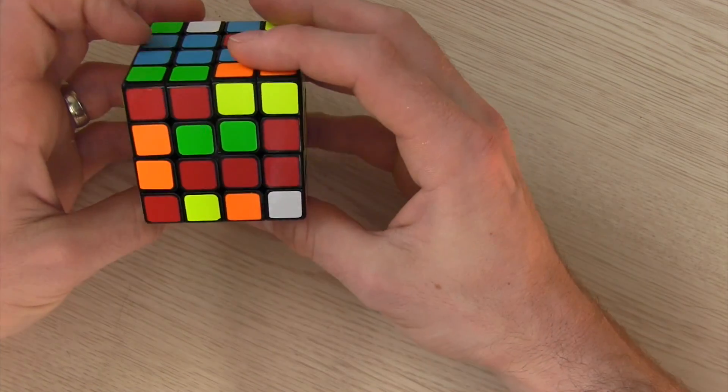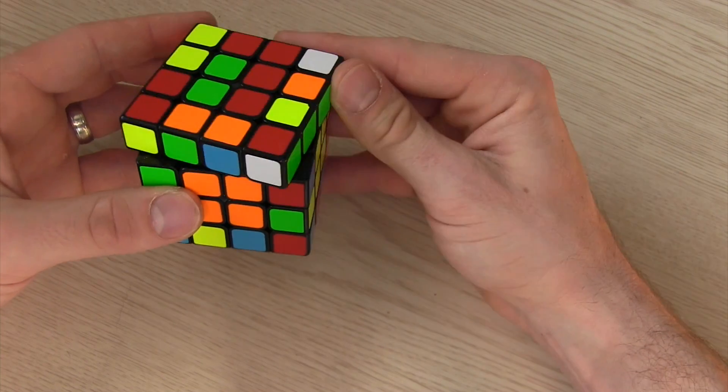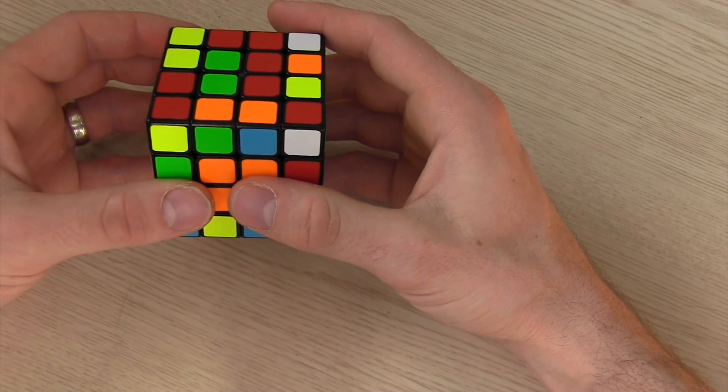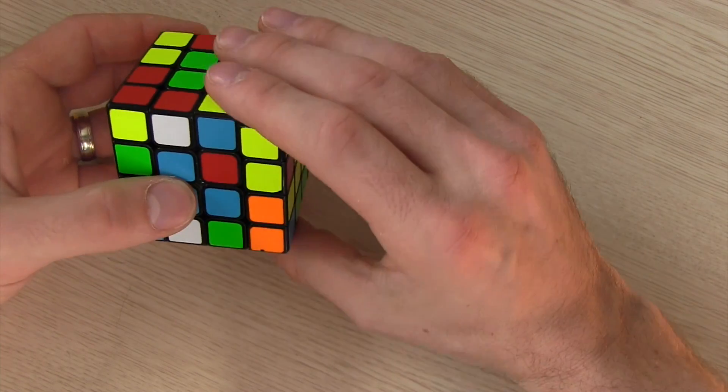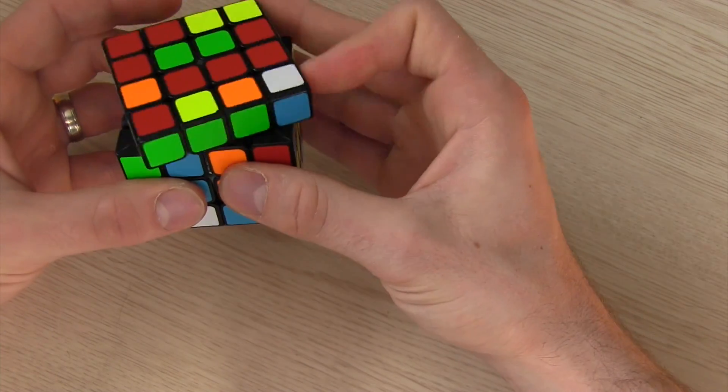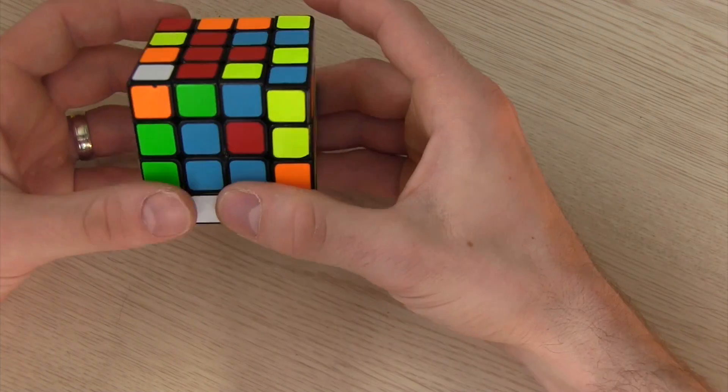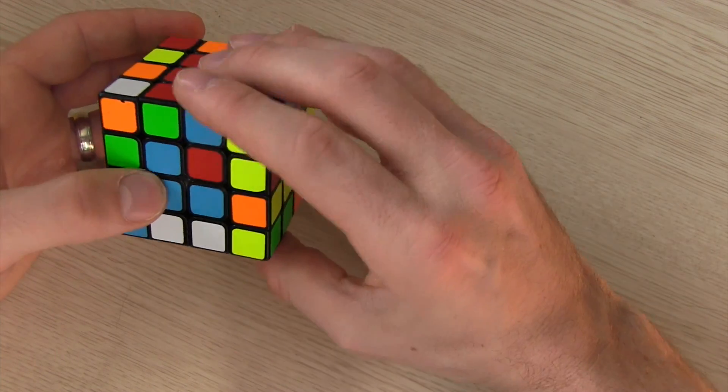So then after orange I have green which I'm going to just set that up like this because that's going to make things a lot easier and I have those two green centers there.